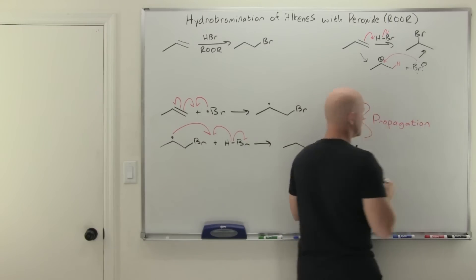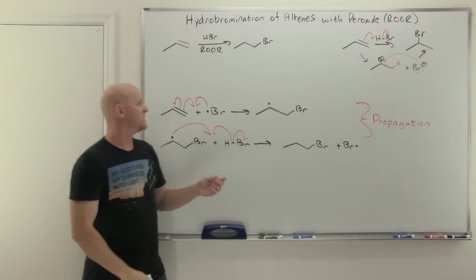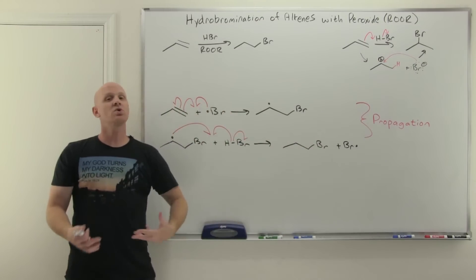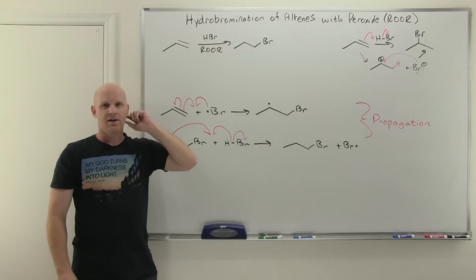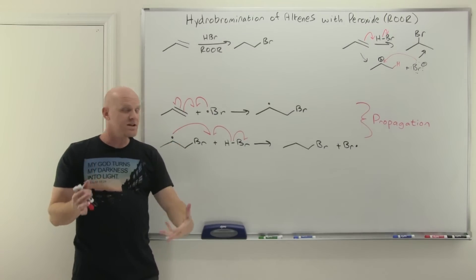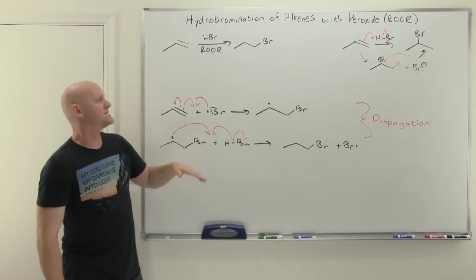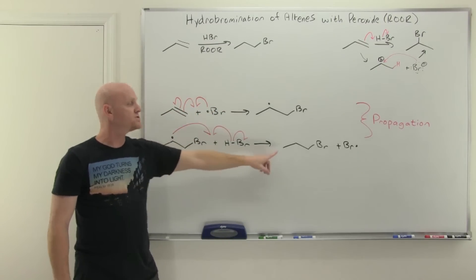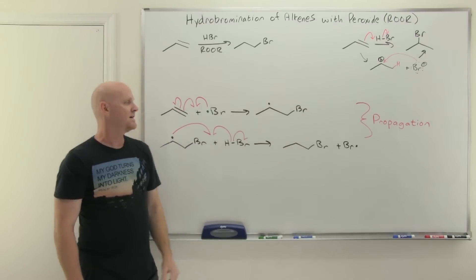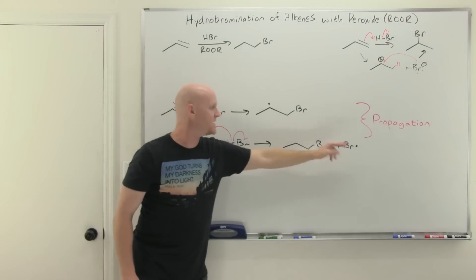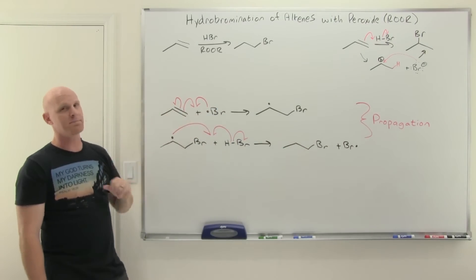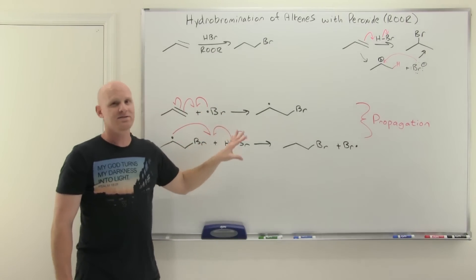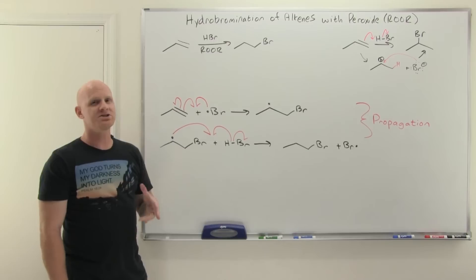You can recognize a propagation step because you start with one radical and end up with one radical — no net decrease in radical concentration. More precisely, a propagation step is a sequence of two steps that repeat over and over to produce your desired product, where the second step produces the radical you need to redo the first step. This is important to understand because the initiation here is going to be a little unusual.